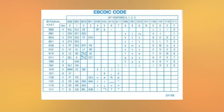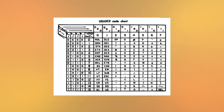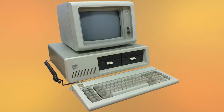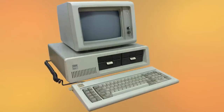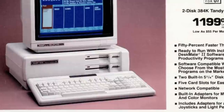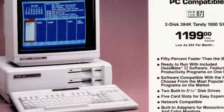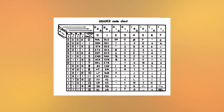EBCDIC may have been prevalent on mainframes, but in the end, it was ASCII that saw the last laugh. In 1981, the IBM PC saw a chance to reinvent IBM's line of computers, and of the many changes it made, it finally used ASCII — only 18 years after it had been introduced. The PC became widely popular, creating a standard in the industry of being IBM-compatible, which of course meant using the ASCII character set.